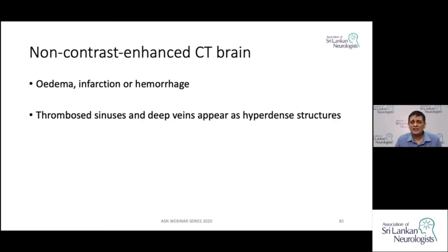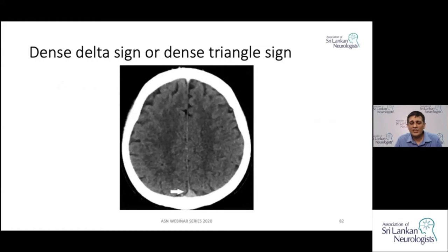Just as in arterial infarcts where a hyperdense middle cerebral artery indicates thrombosis, in venous infarcts the thrombosed vessel appears hyperdense on CT. Here is a CT scan where you should look at the triangular area — the posterior part of the superior sagittal sinus — which appears hyperdense, indicating a thrombus with no blood flowing through it. This sign is called the dense delta sign or dense triangle sign, indicating thrombosis of the superior sagittal sinus.